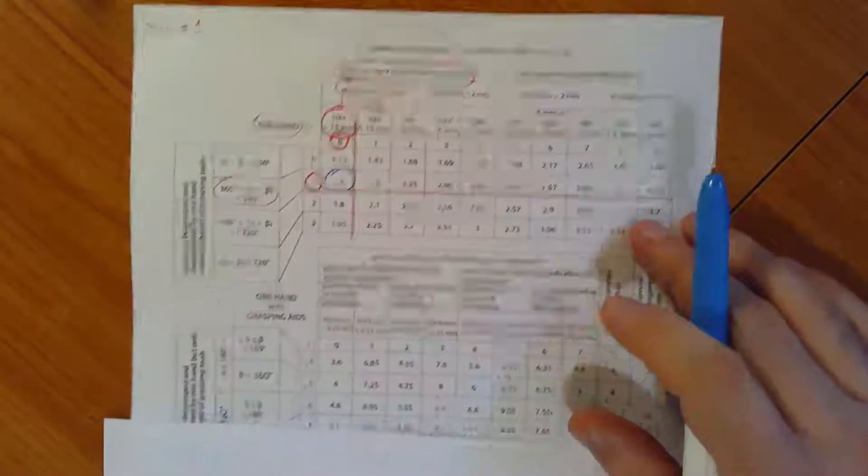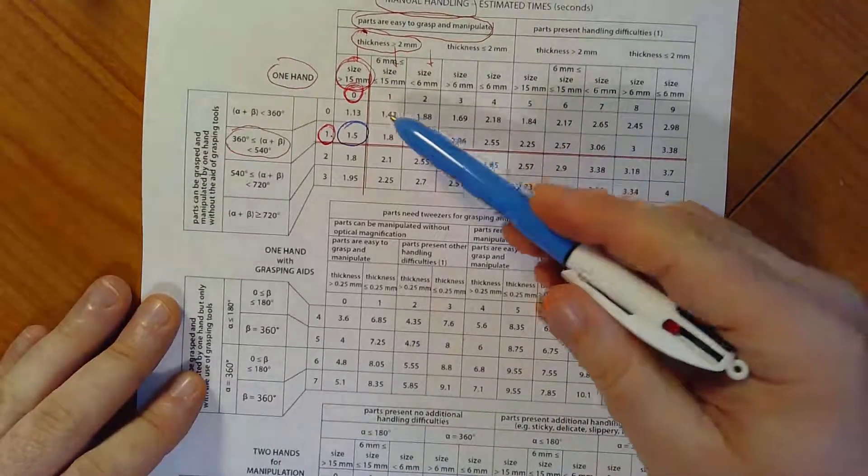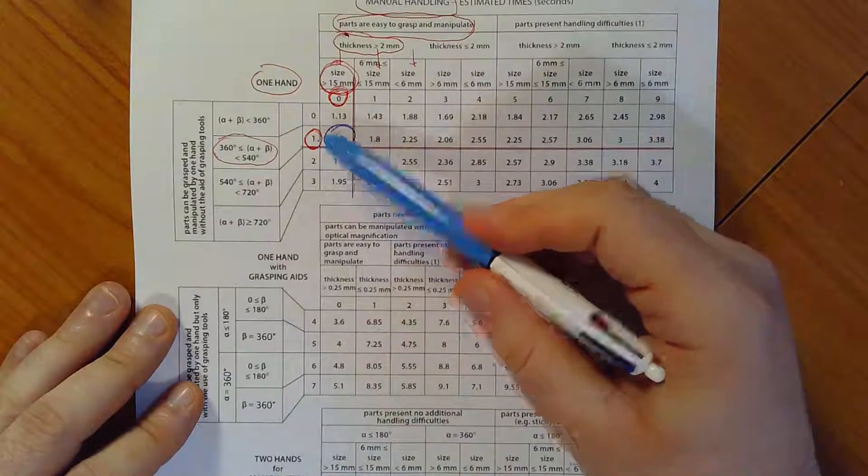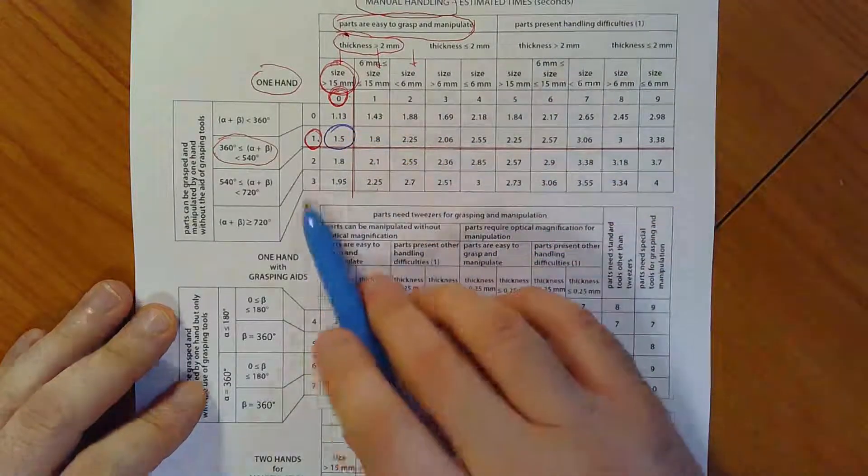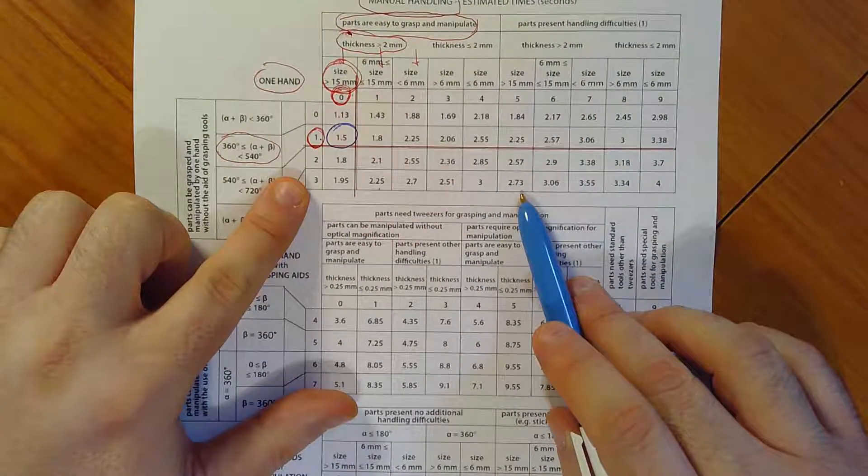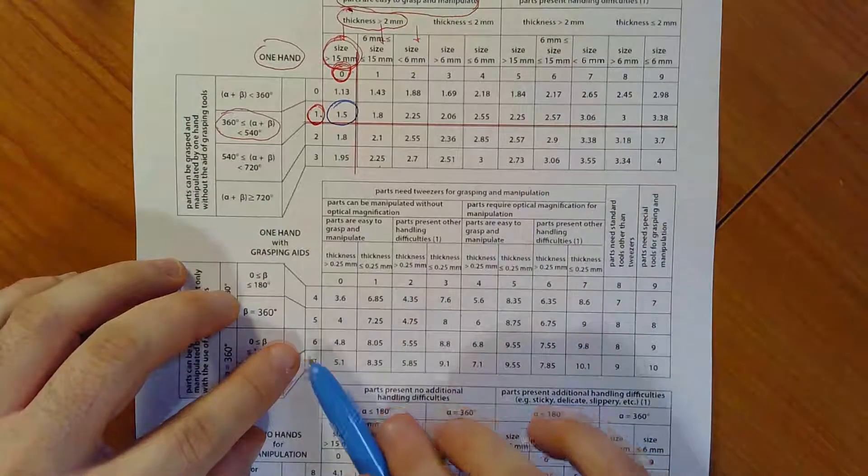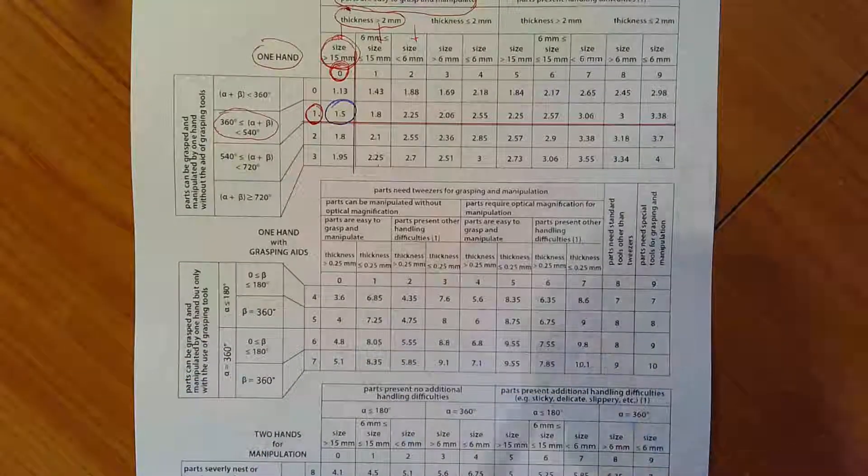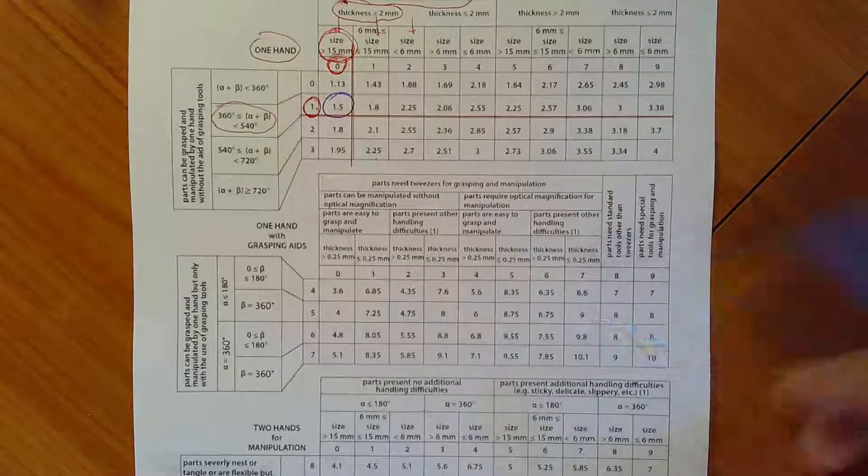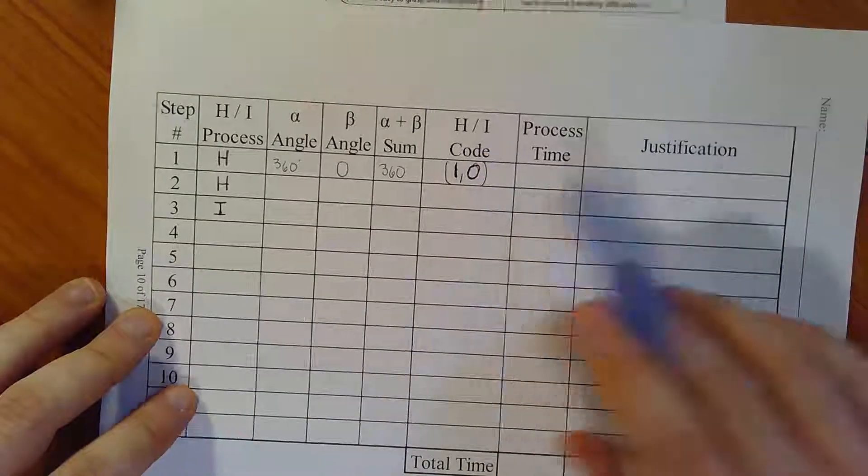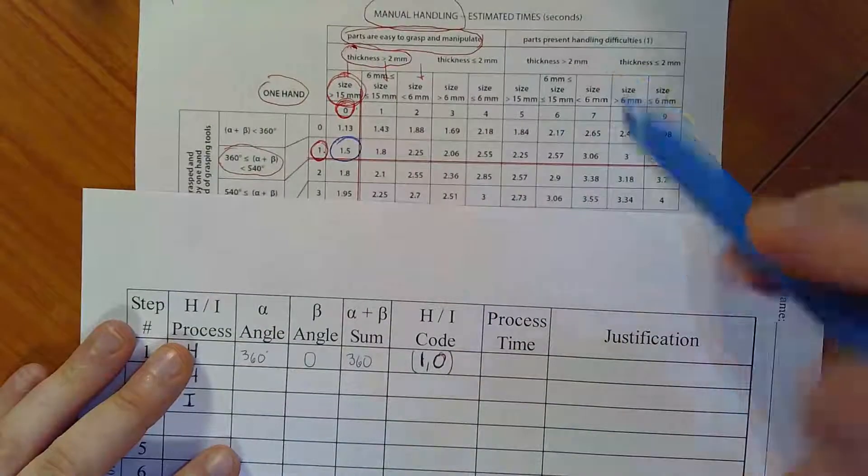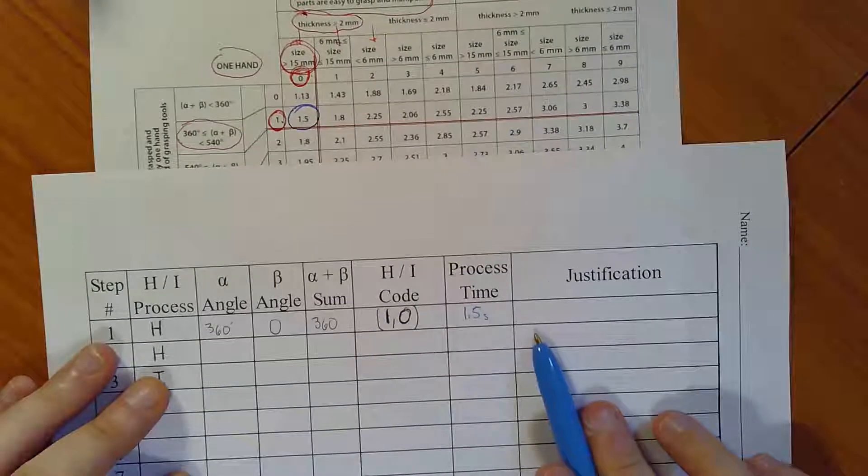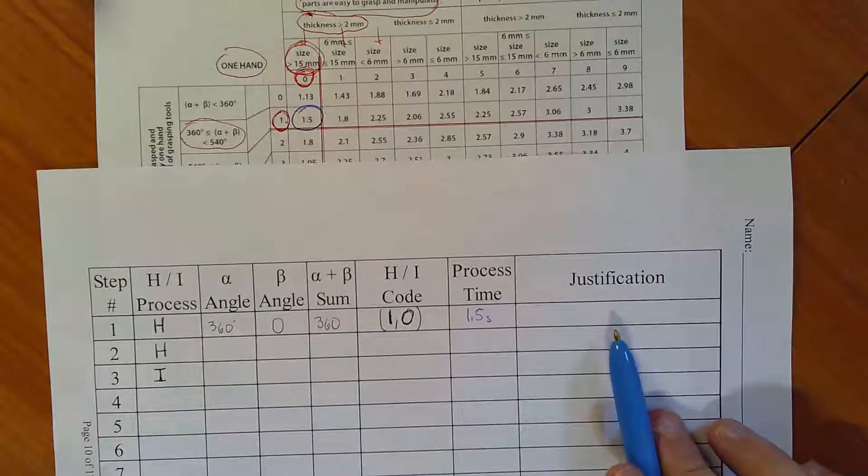The other thing that I should mention while we're here is as you look at this manual handling chart, every single handling time is associated with a unique combination of two numbers, a unique coordinate system. So we've got a one comma zero process. But if I had, say, a three comma five process, here's three. Here's five. That would be point seven three seconds. If I had a six comma six process, that would be here's six. Here's six. That would be seven point five five seconds and so forth. So every one of these times, every single one has a unique code. And so those codes are what are used to determine what the exact process time is based on looking up that particular assembly process in these charts.